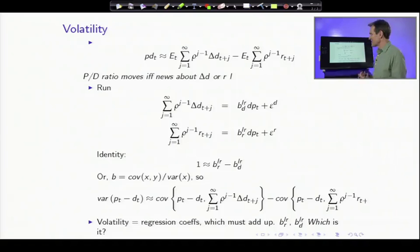And it tells us the source of volatility has to be one of those two. You can see intuitively price-dividend ratios can only move if expected dividend growth moves or if expected returns move. That's just an identity. It's a fact. We can't argue about that fact.